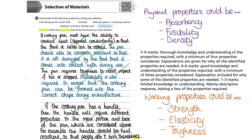Finally, the last statement allows us to make three additional points. If the cooking pan has a handle, then the handle will require different properties to the main body — that's one point. For example, the handle should be heat resistant — second point — so that people do not burn themselves — third point. This means that altogether we have raised 11 marks' worth of content throughout our answer.